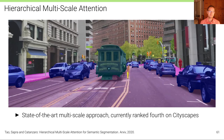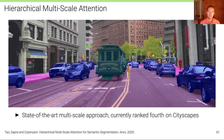Here are results of a state-of-the-art multi-scale approach as of 2021, ranked fourth on Cityscapes. You can appreciate all the details predicted at really high resolution — pedestrians, traffic lights, signs, tree and building boundaries, cars — it's amazing what these deep neural networks for semantic segmentation are able to achieve these days.